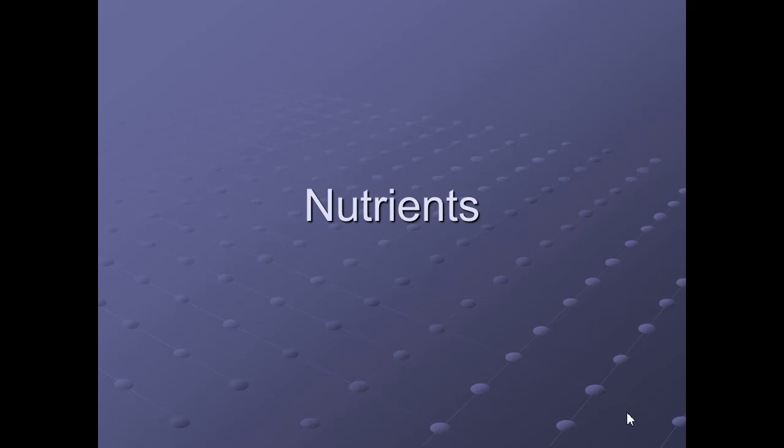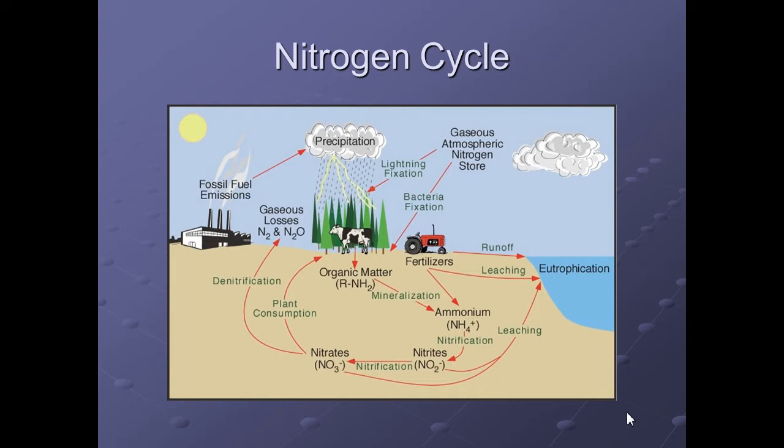Now let's go over nutrients. Numeric nutrient criteria are being established throughout all states — Florida was the first state with a mandated numeric nutrient criteria, working with EPA and stakeholders to establish standards that EPA ratified. Here is a nitrogen cycle diagram. Fossil fuel emissions go into the atmosphere, get caught in clouds, and precipitation brings them back down. Lightning fixation also returns nitrogen to the ground, and organic matter like fertilizer runoff contributes as well.